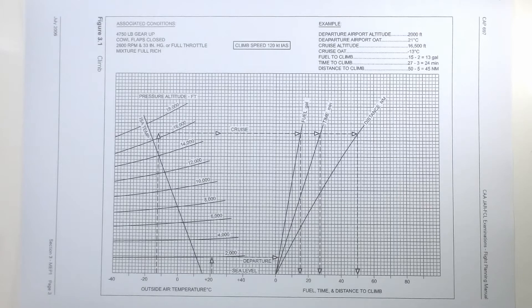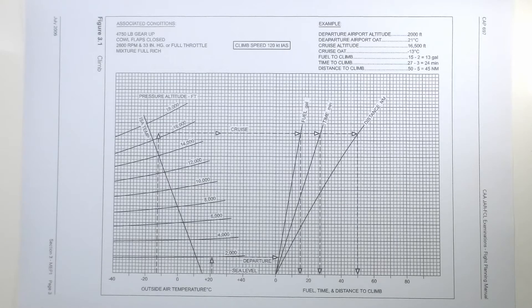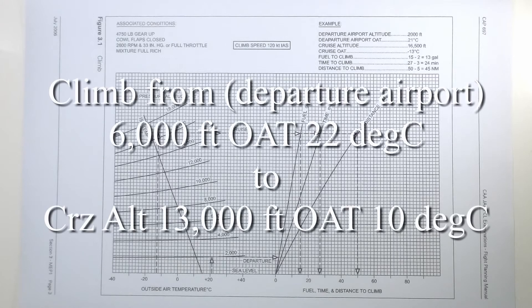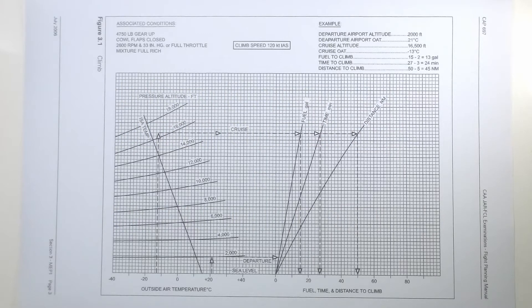Let's demonstrate this by working an example. In our example we shall climb from an aerodrome at 6,000 feet where the outside air temperature is 22 degrees Celsius all the way up to 13,000 feet where the outside temperature will be 10 degrees Celsius. Just like obtaining fuel time and distance to climb for the single-engine aeroplane we shall determine the fuel time and distance to climb from 6,000 feet to 13,000 feet by assuming that both climbs will be done from sea level.